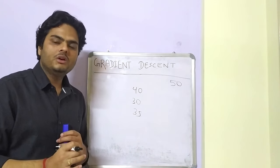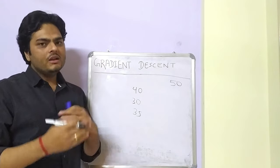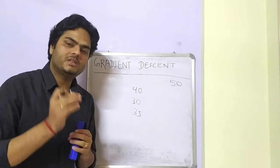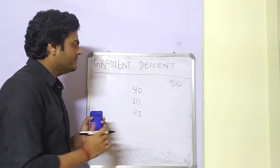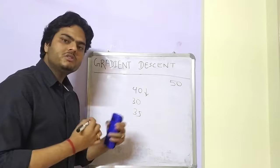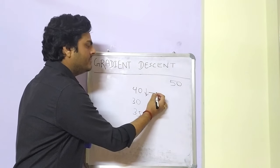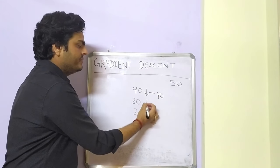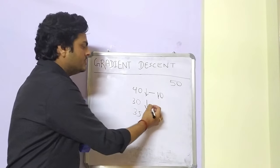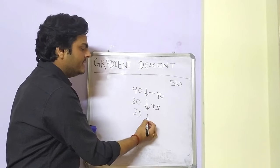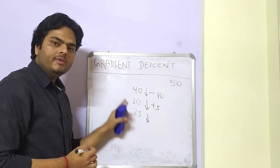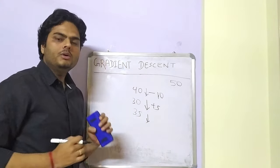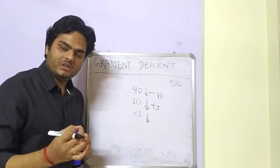In gradient descent we start with a random guess and then slowly move to the correct or best answer. In our example, we started with 40, which was wrong, so we subtracted 10 from 40 to reach 30. That was also not right, so we added 5 to reach 35. If 35 is also not correct, we move one step up, two steps up, one step down, two steps down. This is exactly how parameters are optimized in gradient descent.